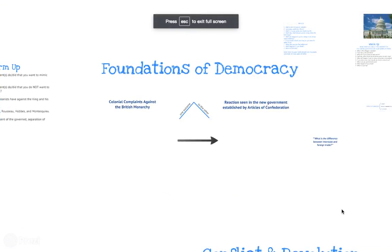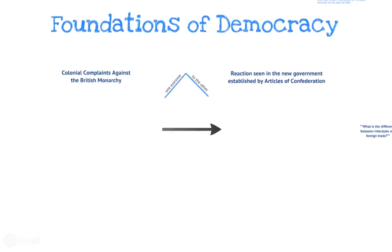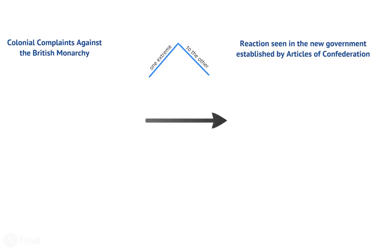Today we are going to talk about the foundations of democracy. We have just finished talking about the American Revolution and the causes that led to it, and now we're going to talk about what happens after the war — we're pretty much skipping the war itself.